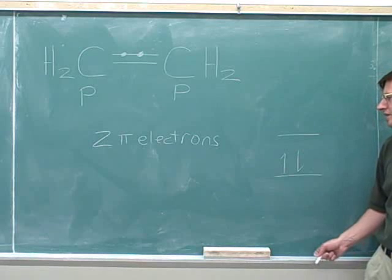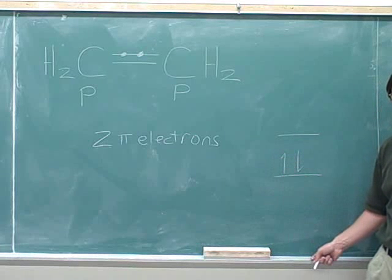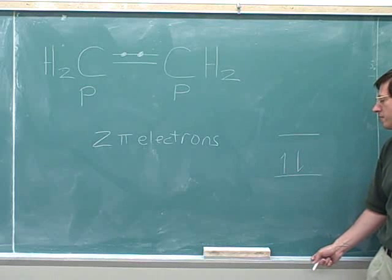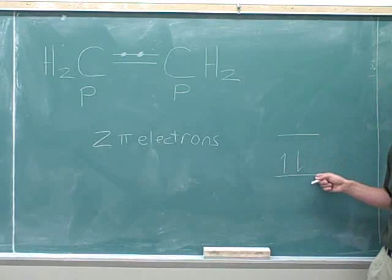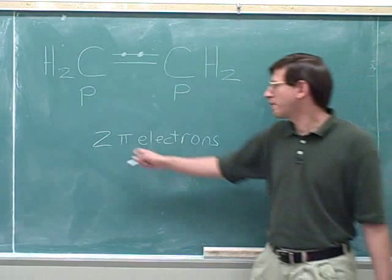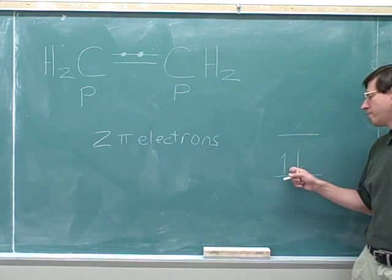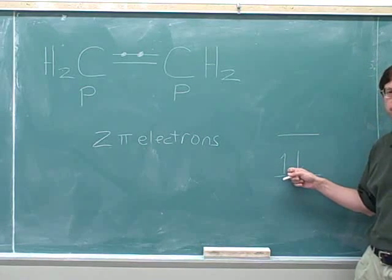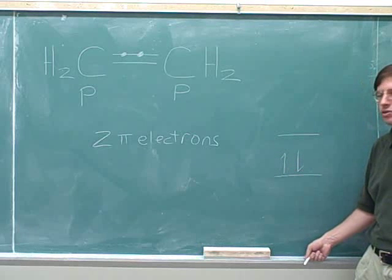This is all that we're really going to need to know about molecular orbitals to understand Hückel's rule. We need to be able to figure out how many pi molecular orbitals there are and what their energy levels are, and we need to count how many pi electrons there are and which pi molecular orbitals those electrons are in.